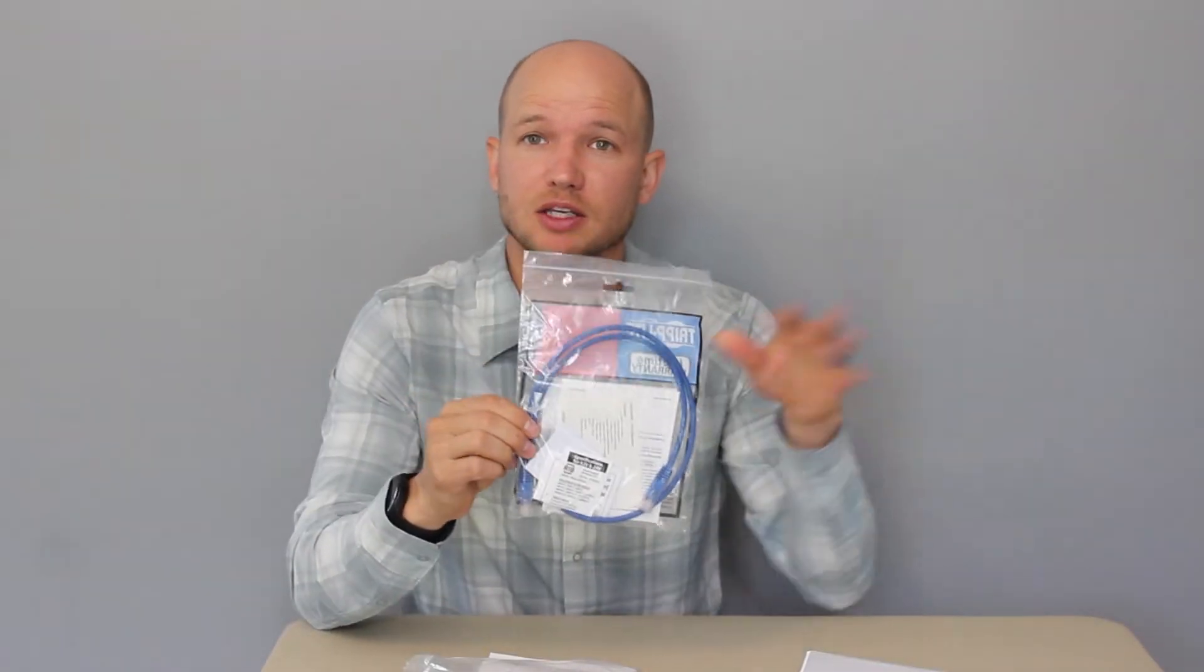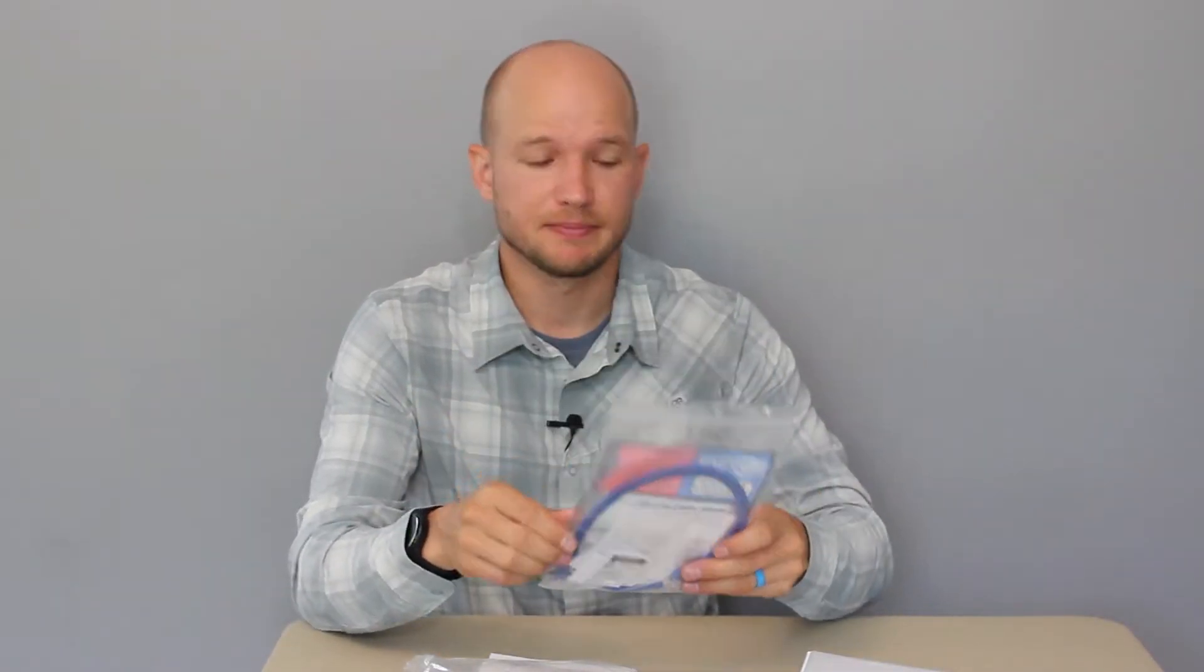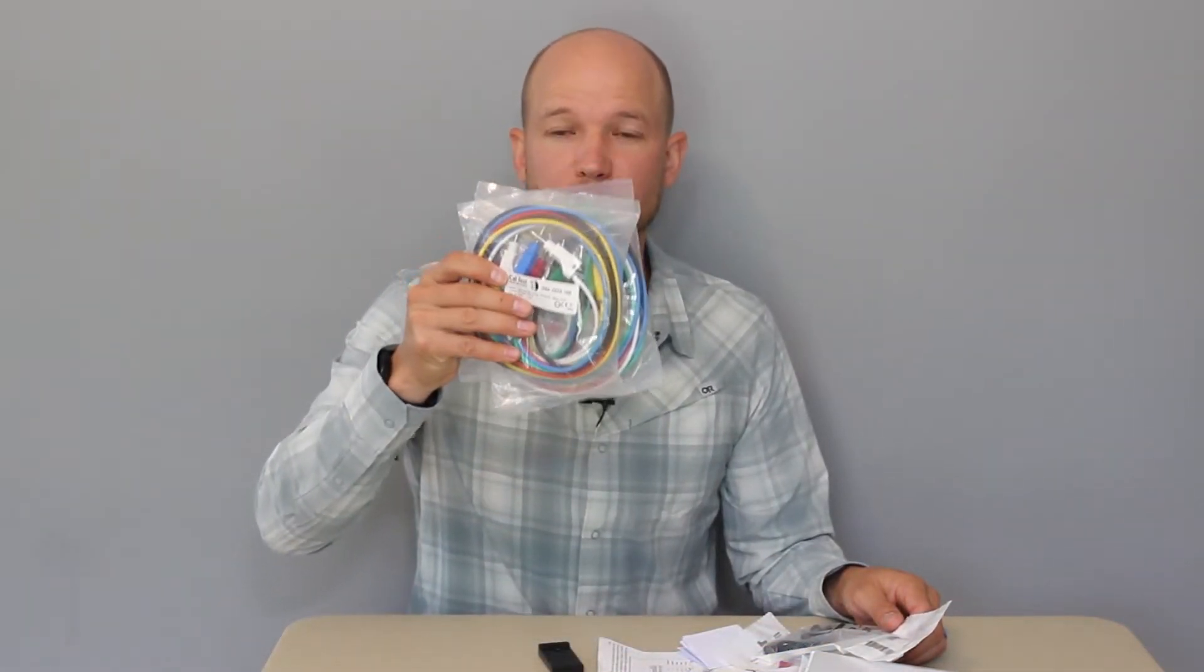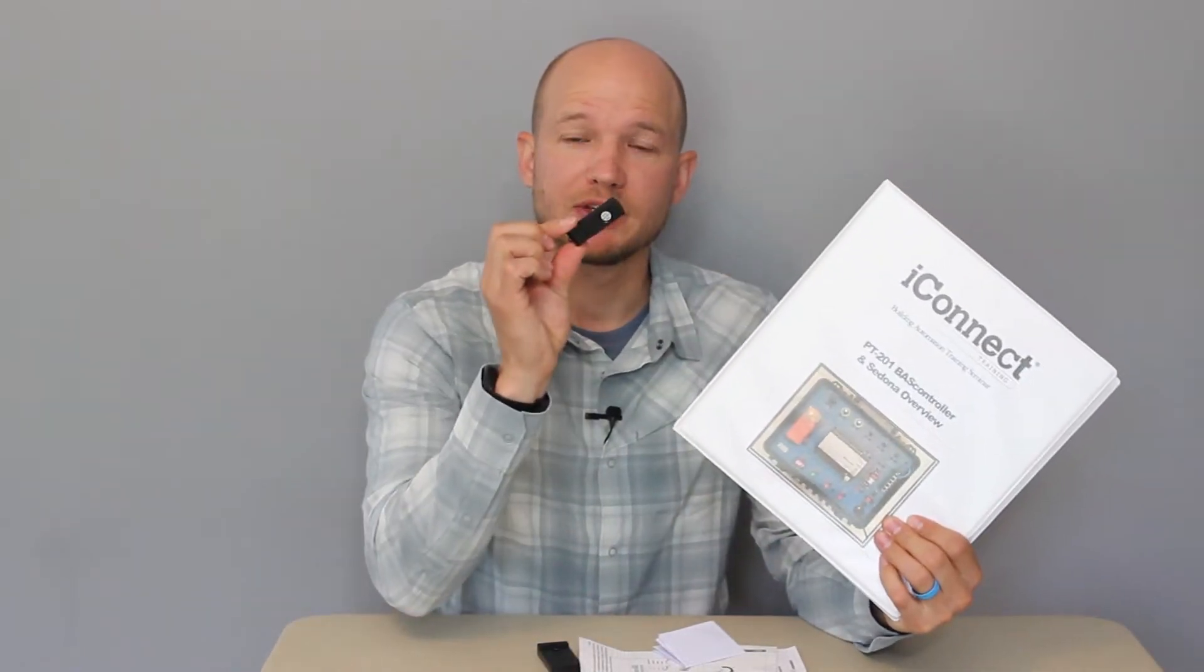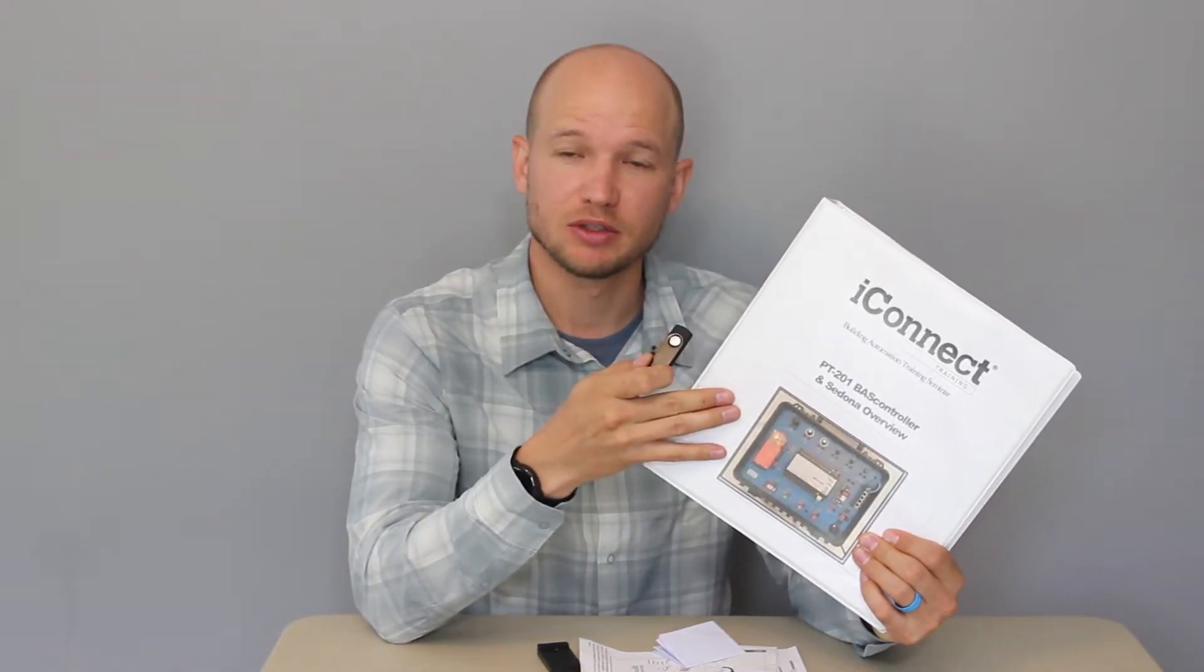We have an ethernet cable to connect the unit to a laptop or desktop, a power cord to connect the unit to the wall. What's included with the PT201 is some pre-wired leads with banana plugs already on them, and then some extra banana plugs, which we'll get into in a bit. The next thing is the instruction manual and then a USB flash drive. Now on this flash drive is the instruction manual, so you have a hard copy and a digital copy.